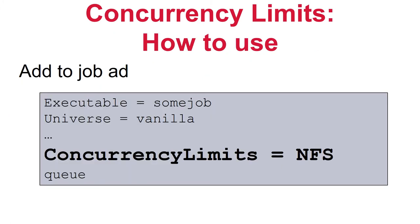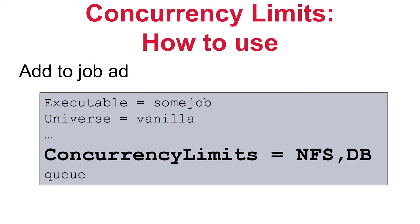For HTCondor to enforce these limits, it needs to know which jobs use them. To use concurrency limits, add a line before the queue statement in the job submit file: concurrency_limits = name_of_limit. You can also specify a fractional amount — for example, specifying that a job uses four concurrency limit units, if some NFS jobs use more server resources than others. For jobs using more than one kind of limit, you can set a comma-separated list to request multiple limits simultaneously.